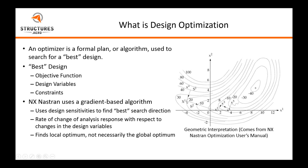So we have two design variables in this case. If we start at a design point on our contour plot, the steepest descent direction is found by the optimizer through design sensitivities. That direction is perpendicular to the contour we're lying on, and so it'll step in that steepest descent direction, search for a minimum in that direction, then reevaluate the design sensitivities and find a new steepest direction. That's essentially what the NX Nastran design optimization solution sequence is doing in the background.